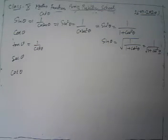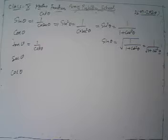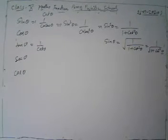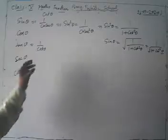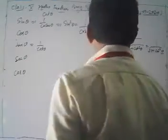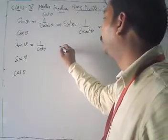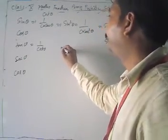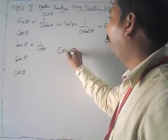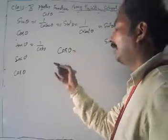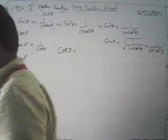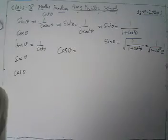Now we are going to try the same for the other T-ratios — you will express each ratio in its own terms. So now we want to represent cos θ in the terms of cot θ.